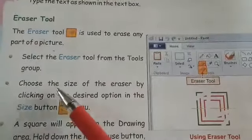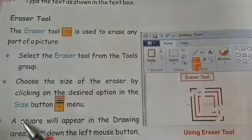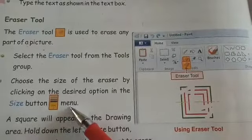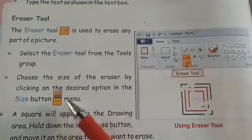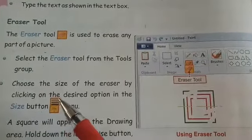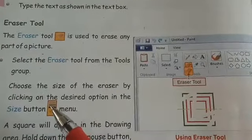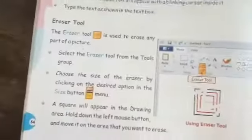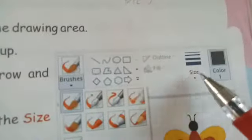Choose the size of the eraser by clicking on the desired option in the size button menu. If you want to increase or decrease the size of your eraser, you can do the same by using the size option. The size option is shown here, and after clicking on it you will get some size options for your eraser.